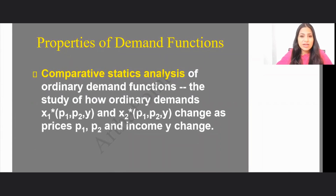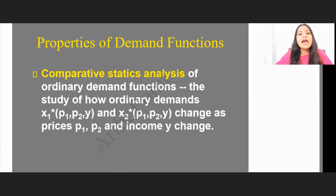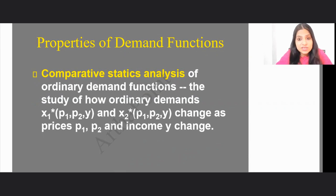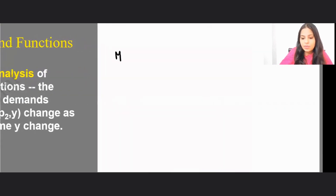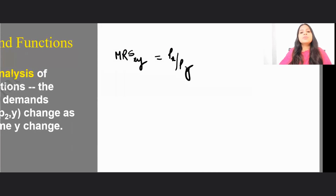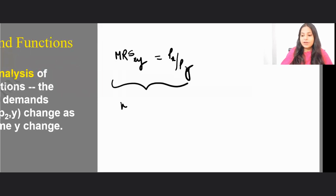Because we have already tried to understand how we determine the demand function, we know that in order to determine it, we talk about utility maximization. When we talked about well-defined preferences, we were maximizing utility wherever the MRS was equal to Px by Py — that is where utility was getting maximized for well-defined preferences.